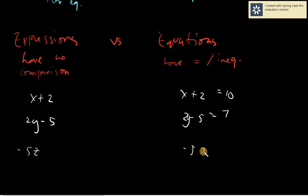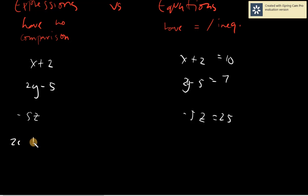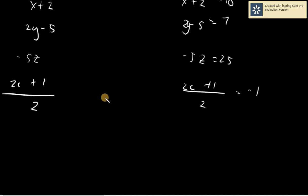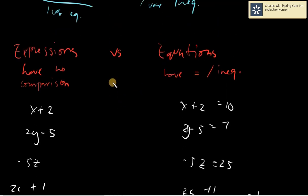Negative 5j is an expression, while negative 5j equals 25 is an equation — because there is no equal sign on the first one. Any expression that has an inequality symbol also belongs to equations, not expressions. So comparison symbols — whether equal, greater than, less than, greater than or equal, or less than or equal — all place something in the equation category rather than expression.